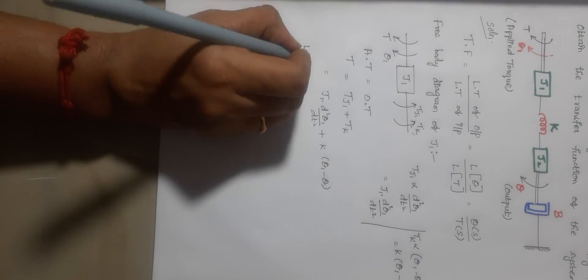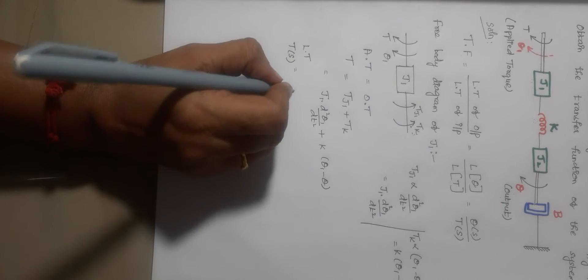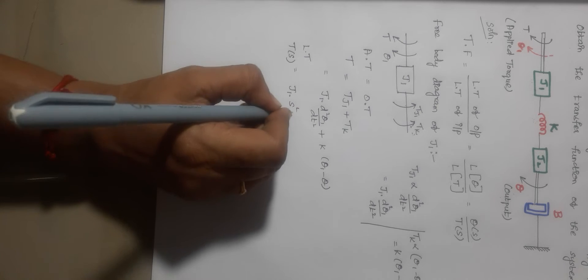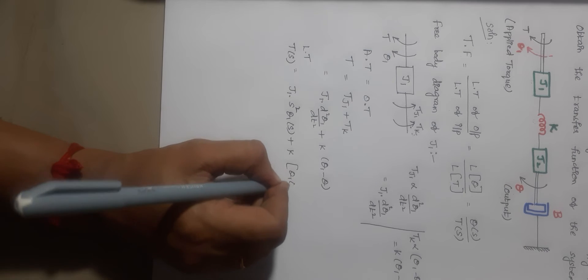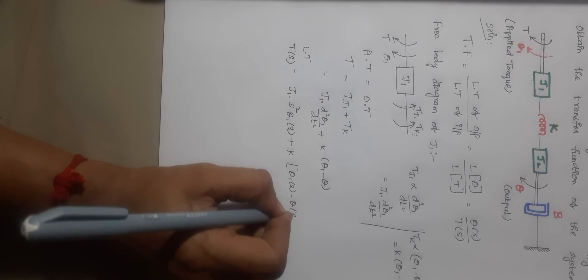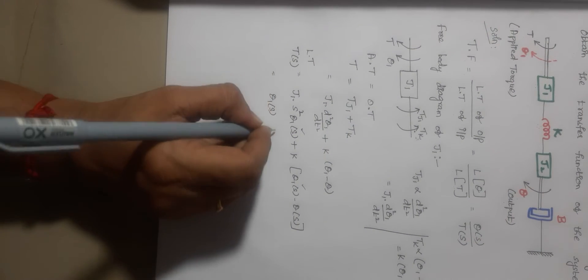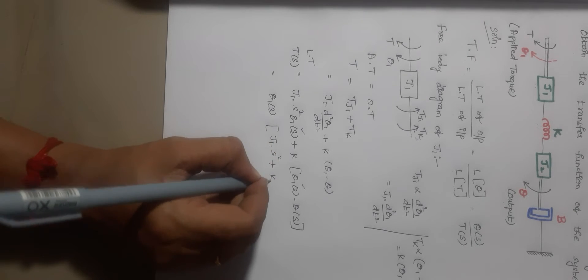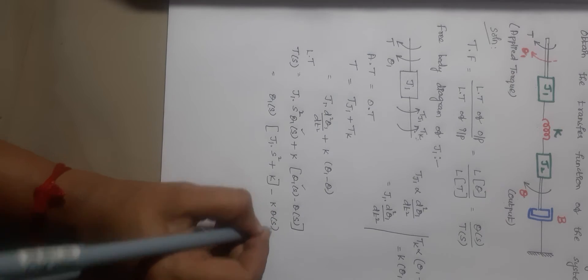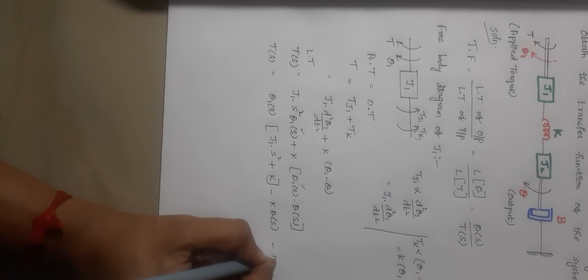Applying Laplace transformation: T(S) = J1·S²·θ1(S) + K·(θ1(S) − θ(S)). Taking θ1(S) outside as a common factor, this becomes: T(S) = θ1(S)·(J1·S² + K) − K·θ(S). This is expression number 1.